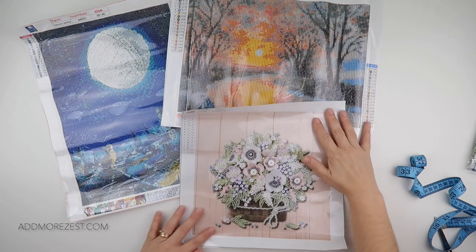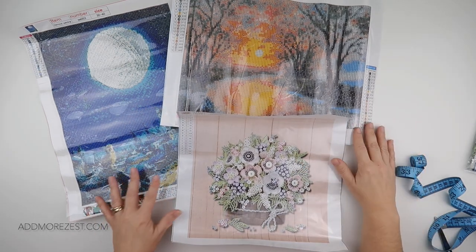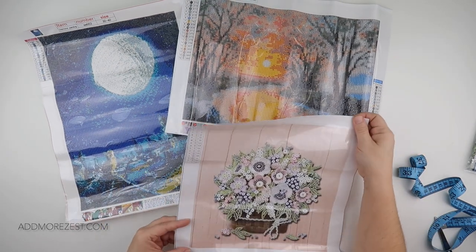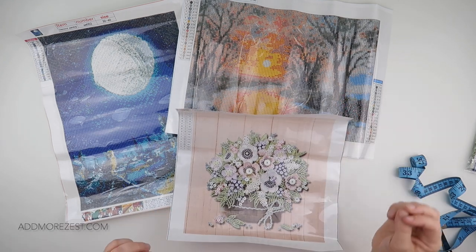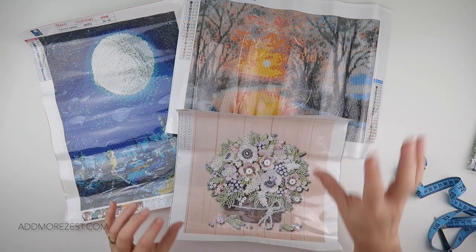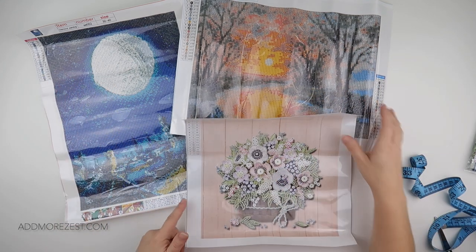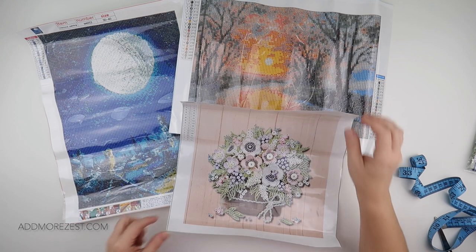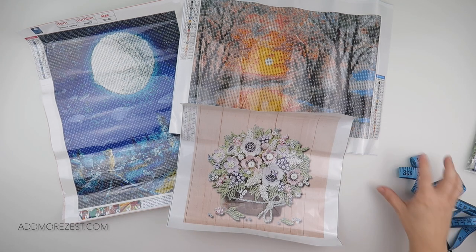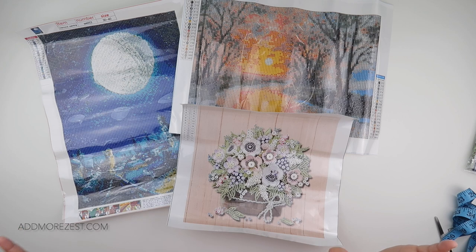So yeah, they're the three items that Ease DIY sent me, were kind enough to send me this time. A little bit of difference for these. We've got a couple of, we've got a sunset, we've got a moon, and then we've got a gorgeous bunch of flowers. But I will pop the links to them all down below in case any of these interest you. And thank you so much to Ease DIY for sending me them to share with you all. Speak to you all again soon.